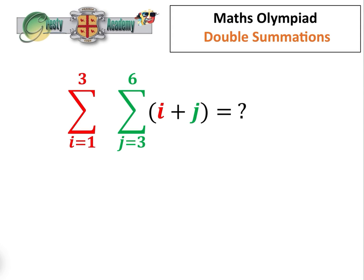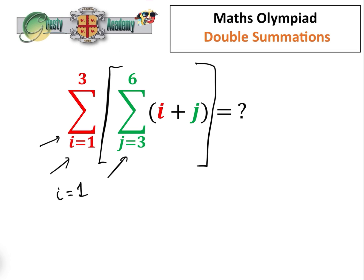We have this double summation: the sum between i equals one and three of the sum between j equals three and six of i plus j. What's the answer? A lot of people tend to get this wrong. What does it mean? Well, we can put a bracket around here because first of all we are going to do this outer sum, and then we're going to do the inside sum each time we iterate the outer sum.